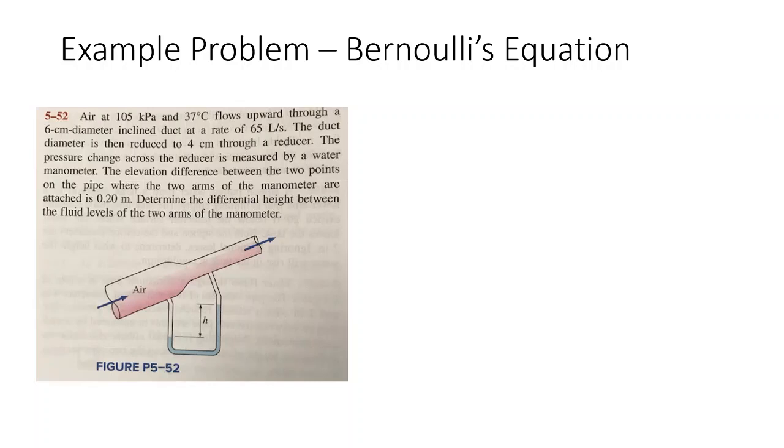The duct diameter is then reduced to 4 centimeters through a reducer and the pressure change across the reducer is measured by a water manometer which is shown down here. The elevation difference between the two points on the pipe where the two arms of the manometer are attached is 0.2 meters. We're asked to determine the differential height between the fluid levels of the two arms of the manometer.